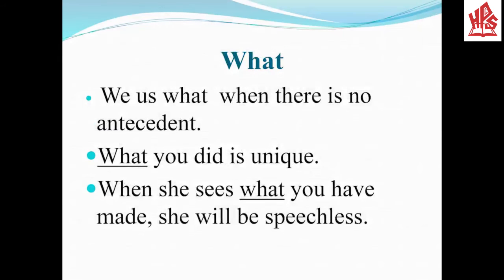What is used when there is no antecedent. For example: What you did is unique — we are using what for an unknown antecedent. Another example: When she sees what you have made, she will be speechless — we are using what for the thing which has been made but not mentioned.